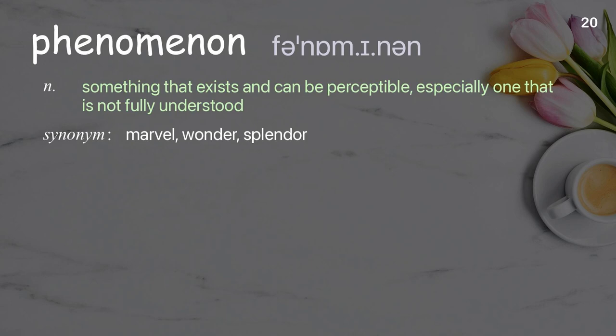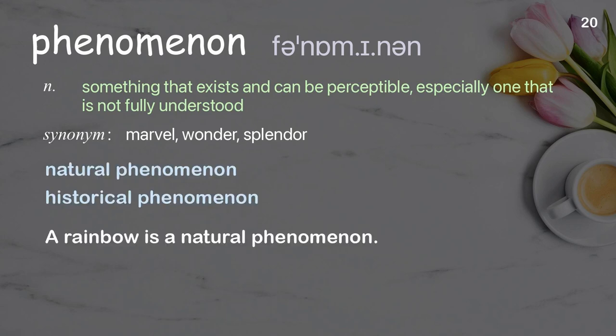Phenomenon. Something that exists and can be perceptible, especially one that is not fully understood. Examples: natural phenomenon, historical phenomenon. A rainbow is a natural phenomenon.